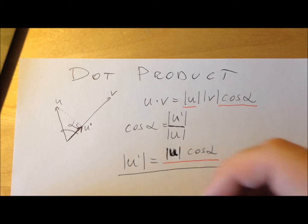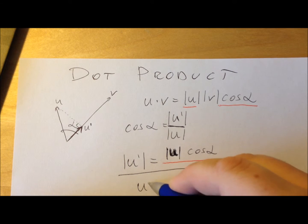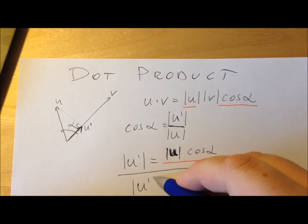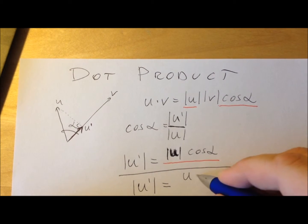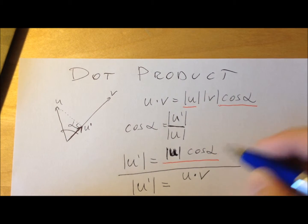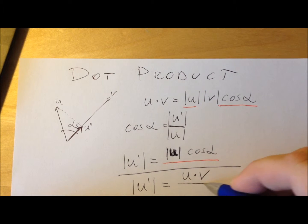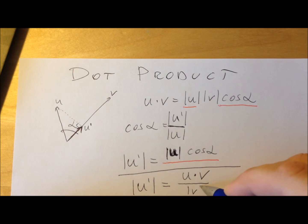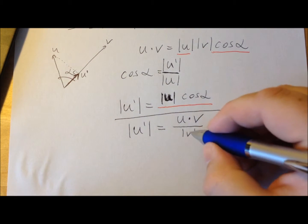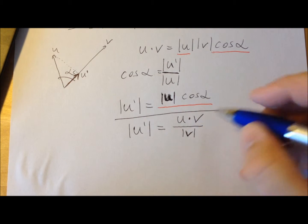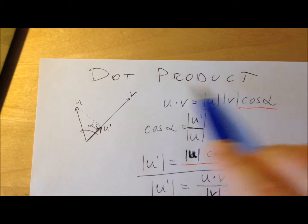From this formula, the length of u prime is the length of u times cosine alpha. So I can write that the length of u prime equals u·v divided by the length of v. This is one of the most fundamental formulas for using the dot product.